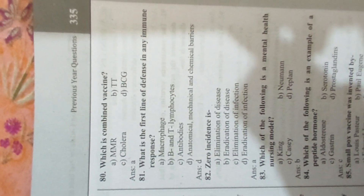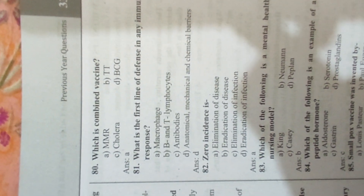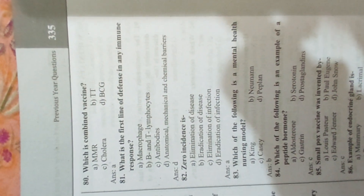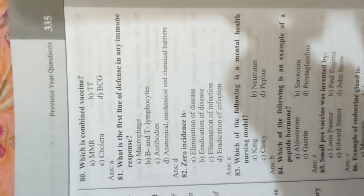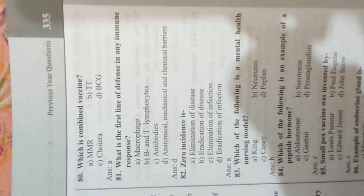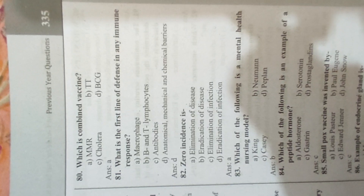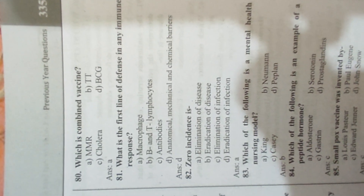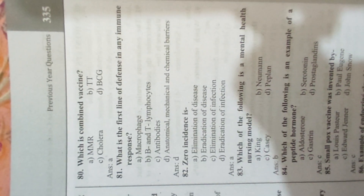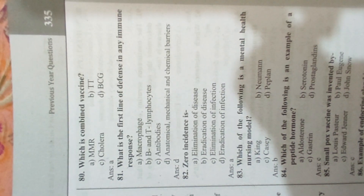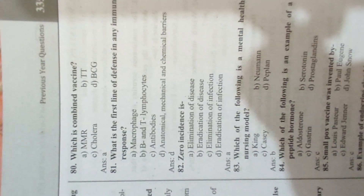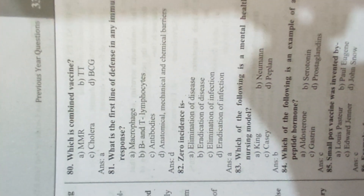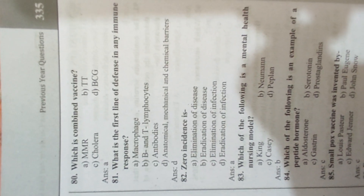Question 80: Which is a combined vaccine? Answer A, MMR. Question 81: What is the first line of defense in any immune response? Answer D, anatomical, mechanical, and chemical barriers. Question 82: Zero incidence is Answer A, elimination of disease.